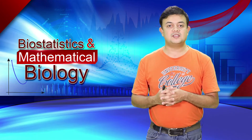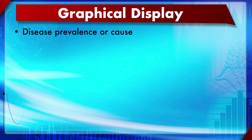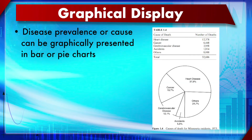Disease prevalence rates are usually presented graphically as a pie chart or bar diagram. A bar diagram is more informative because when segment sizes are nearly equal, it is hard to differentiate them in a pie chart. However, when differences are clear, a pie chart is also perfectly fine to use.